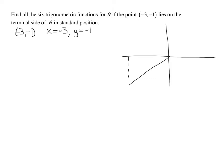So let's sketch our angle. Here's our angle theta. I know that x equals negative 3 and y equals negative 1 — make sure you label them correctly. We also have to find r in order to find all six trig functions.